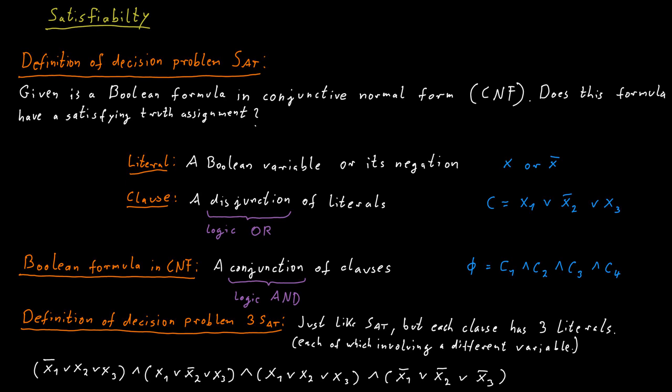This formula has a satisfying truth assignment. So we can find values for the variables in such a way that the formula becomes true. In this case, we can set x1 to true or to 1. We can set x2 to true as well. And we set x3 to false or 0.